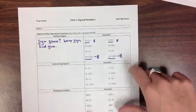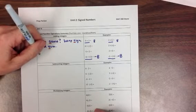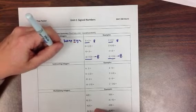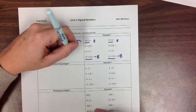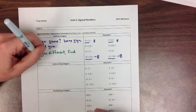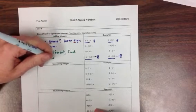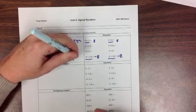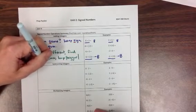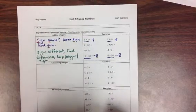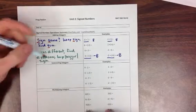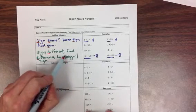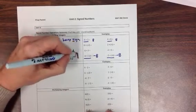Then part 2 of the rule says, if the signs are different, find the difference, and keep the bigger sign. I've placed that word 'bigger' inside a set of absolute value bars, because I don't mean that the number itself is bigger — I mean that it has a bigger absolute value.